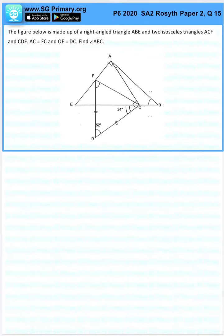So let's look at the isosceles first. Angle DFC is the same as DCF, which is 180 minus 52 divided by 2, which will give us 64 degrees.